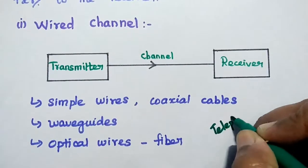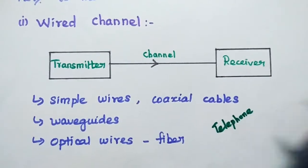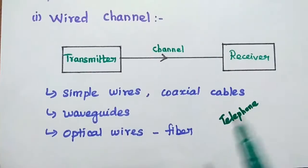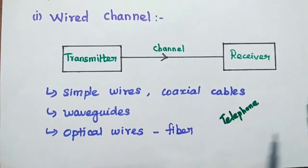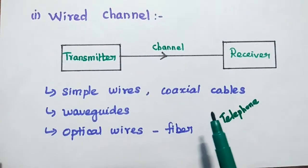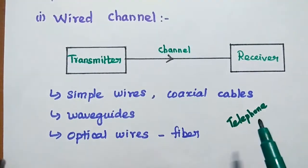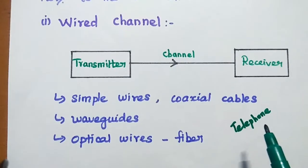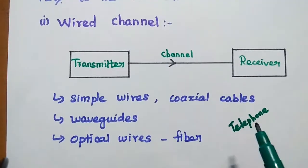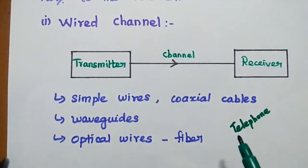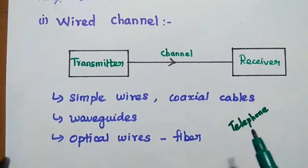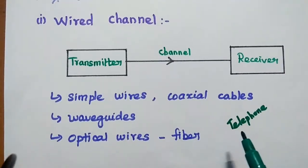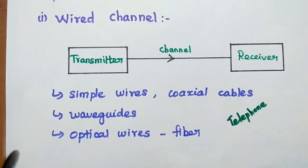Telephone exchanges use wired communication. However, in wired communication the transmission capacity is very limited, though it produces very reliable communication — its efficiency is high, but capacity is limited. We cannot connect all places through wired communication.